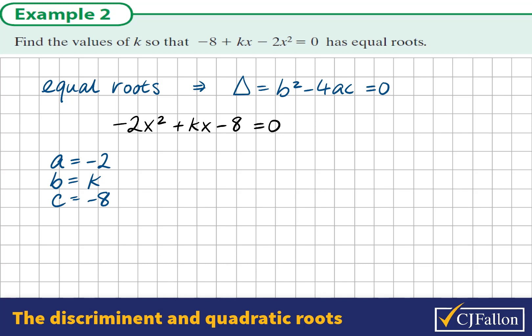So we substitute these values into our discriminant formula. We get k² - 4 times -2 times -8. Now, -4 times -2 times -8 is equal to -64. So we get the discriminant is equal to k² - 64.